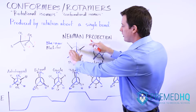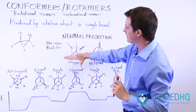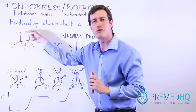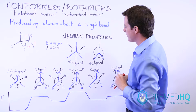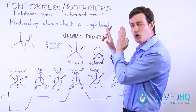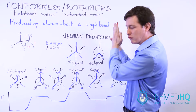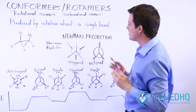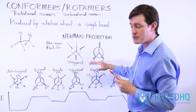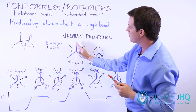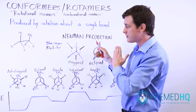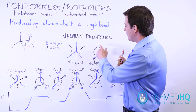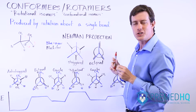Staggered means that these are fairly spaced out from each other — there's as much distance and as little hindrance as possible between the groups in the back and the groups in the front, so they're less likely to have steric interactions along that carbon-carbon bond. Eclipsed means that they've twisted in such a way that they're pretty much overlaying each other, both occupying the same region in space except one is on the far side and one is on the near side of that carbon-carbon bond.